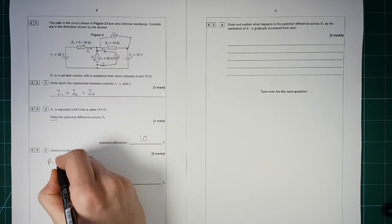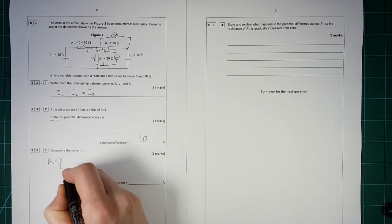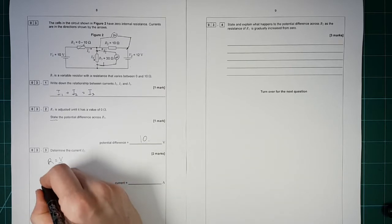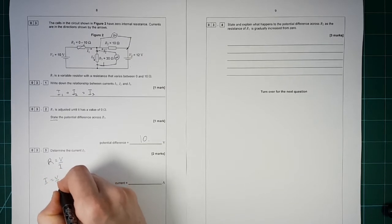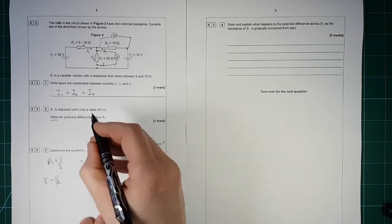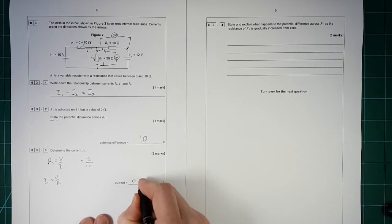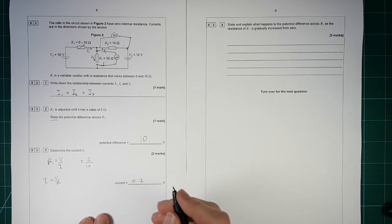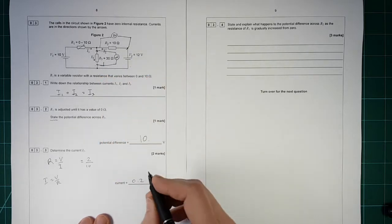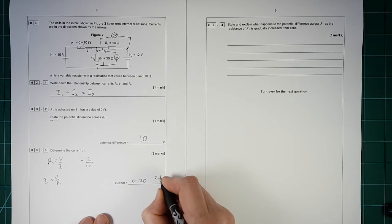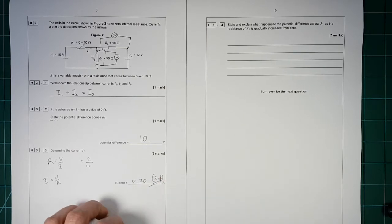R is equal to V over I. Rearrange that for current. So I is equal to V over R, which is equal to, there are 2 volts across a resistance of 10 ohms. So it's 0.2, and let's be careful with sig figs here. Everything seems to be to 2, so it's 0.20 to 2SF. And the unit is amps.